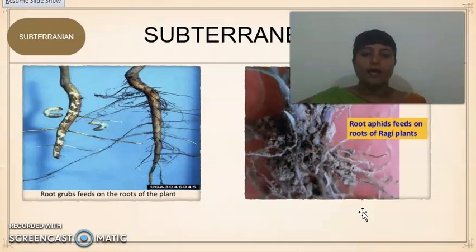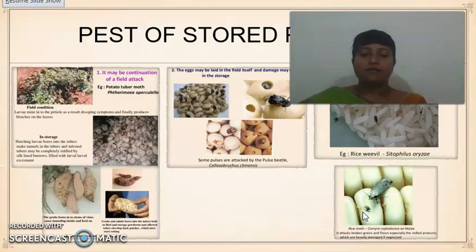Moving on to subterranean insect pests — root grubs and root aphids feed upon the roots. They live in the soil, feed upon the roots, and extract nutrition from them. There are also insect pests in stored products, like Sitophilus oryzae, the rice weevil, and the pulse beetle, which eat up the contents of pulses when stored for a long time.